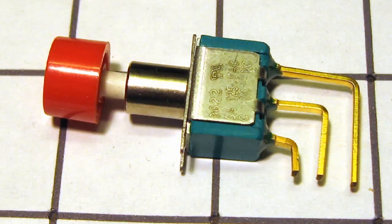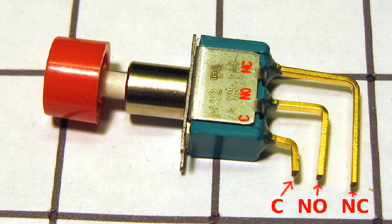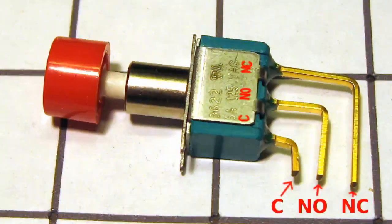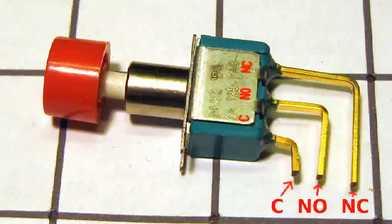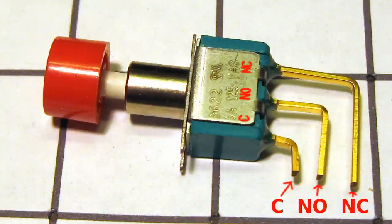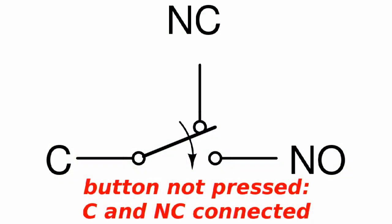The push button included with the USB NerdKit has three terminals, labeled C for common, NO for normally open, and NC for normally closed. When the button isn't being pressed, there's a connection between C and NC. The non-pressed state is considered normal.